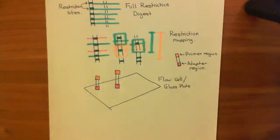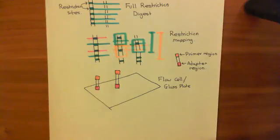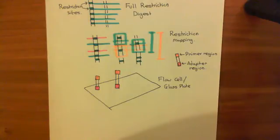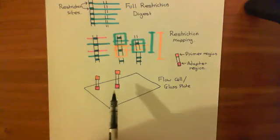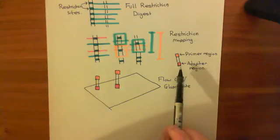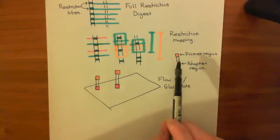Welcome to this next video on next generation sequencing, where we're looking at it in the context of the Human Genome Project. So what we have done so far is we have performed a partial restriction digest of our chromosomes and we've got loads of different fragments, which we now want to sequence. We've attached adapter regions on the bottom of these DNA fragments and we've attached primer regions at the top.